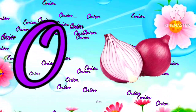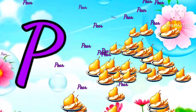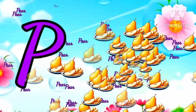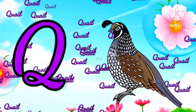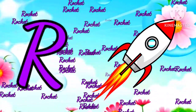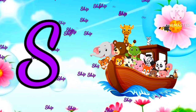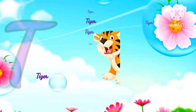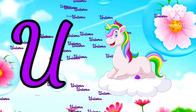N for nail, O for onion, P for pear, Q for quill, R for rocket, S for sheep, T for tiger, U for unicorn.